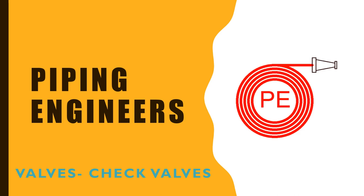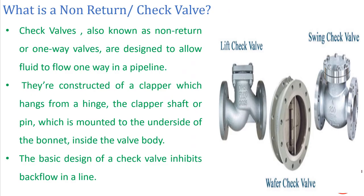Let's learn about the NRV or check valve. NRV and check valve both represent the same thing — some people call them non-return valves and some call them check valves. Basically, check valves are also known as non-return valves or one-way valves. This term itself defines these valves: the flow of fluid is allowed in only one direction, so no backflow is allowed when an NRV is placed in the pipeline.